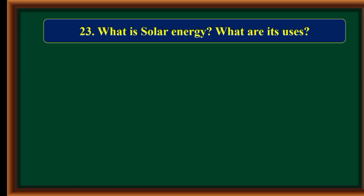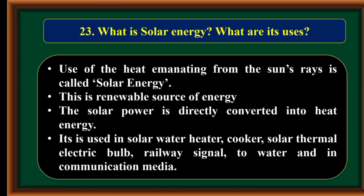What is solar energy and what are its uses? The use of heat emanating from the sun's rays is called solar energy. This is a renewable source of energy. The solar power is directly converted into heat energy. It is used in solar water heaters, cookers, solar thermal systems, electric bulbs, railway signals, water pumping, and communication media.